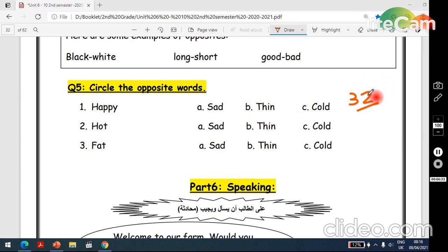Now page 32, circle the opposite words. One, happy. Sad, thin, or cold? Yes, a, sad. What about two, hot. Sad, thin, or cold? Yes, cold. Now three, fat. A, sad, B, thin, or C, cold? Yes, the correct answer is B, thin.